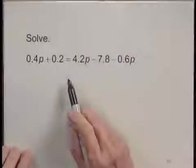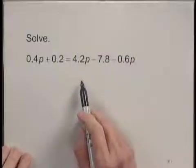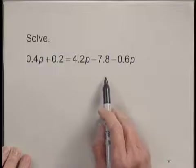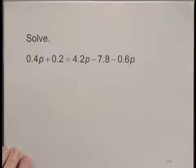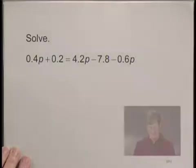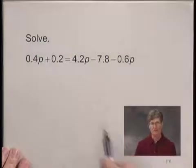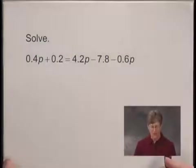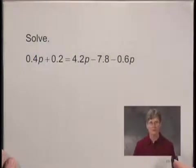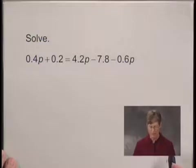We'll solve the equation 0.4p plus 0.2 equals 4.2p minus 7.8 minus 0.6p. Now this equation has a lot of decimals in it. So the first thing I'm going to do is to multiply on both sides of the equation to eliminate the decimals, to clear the decimals.